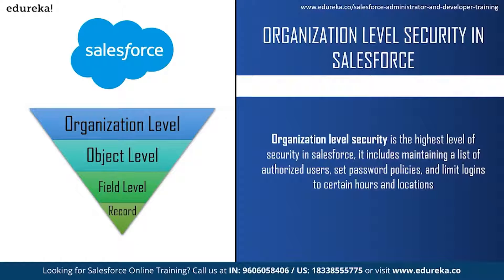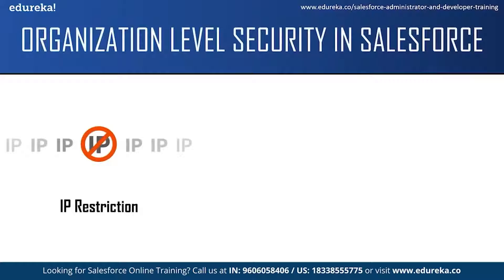Organization level security lets you decide when and from where your users can access the system. It secures data from unauthorized users. Important security features at this level include restriction of IP addresses, password policies, and login access. For IP restriction, you can allow certain users to log in only from a set of IP addresses using trusted IP ranges, limiting login to when they are in the office.